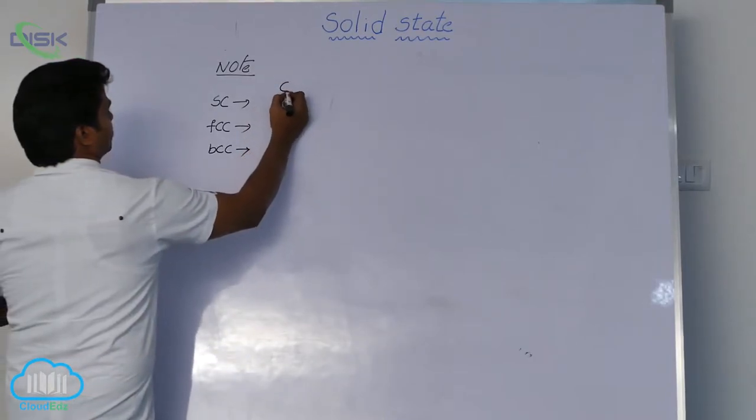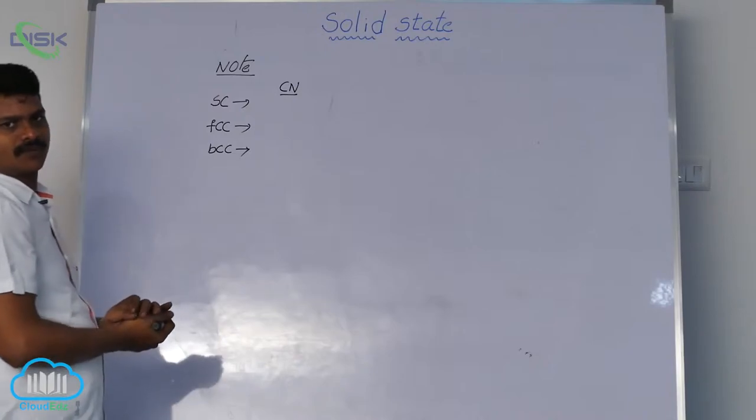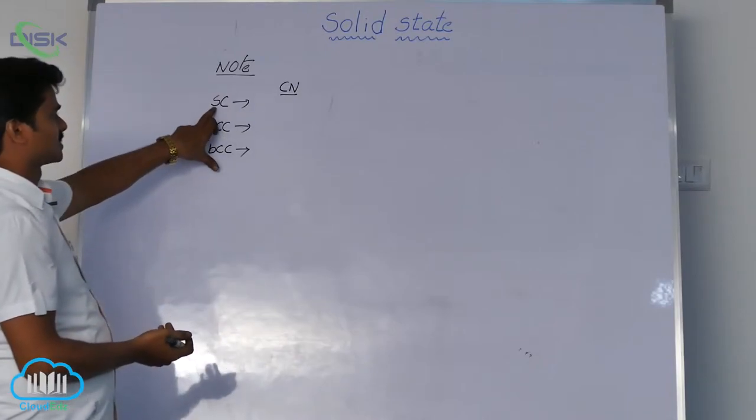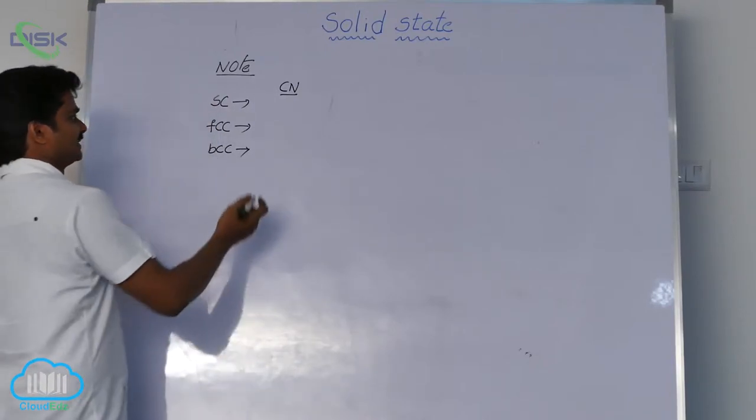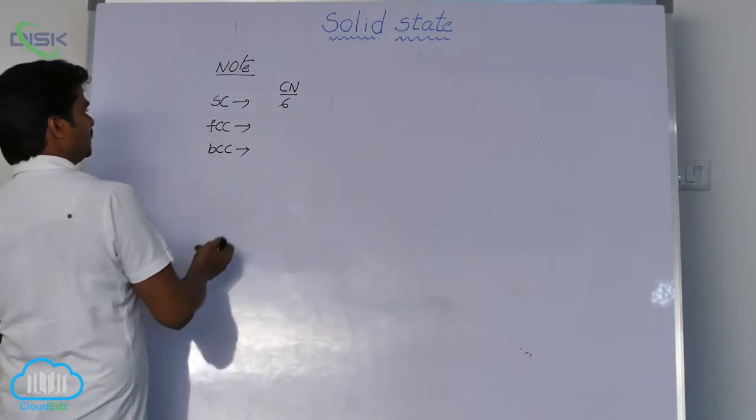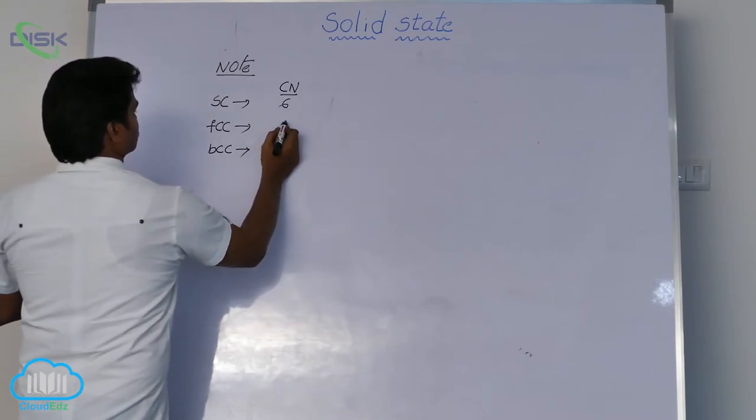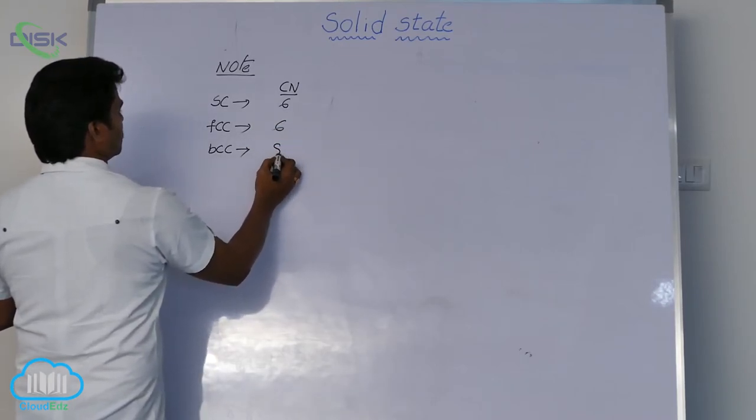See first in coordination number in all systems. In simple cubic system, coordination number is 6. In FCC coordination number is 12. In BCC coordination number 8.